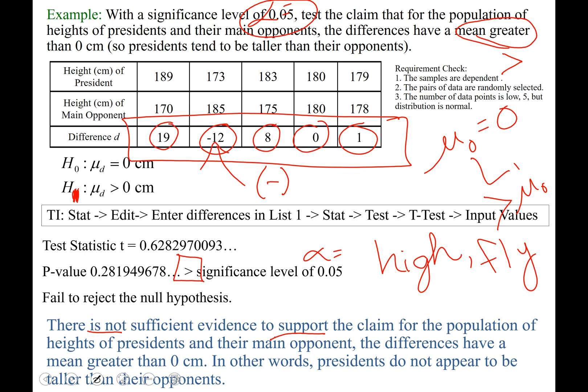In other words, presidents do not appear to be taller than their main opponent. Well, we only looked at five of the presidents and their main opponents paired sample values, so maybe if we looked at more of them we might find something different. Or we might not. Interesting question there.